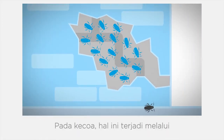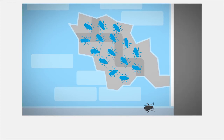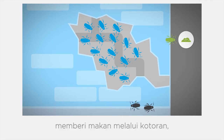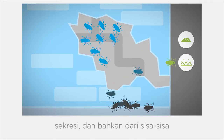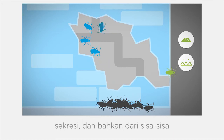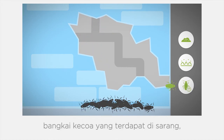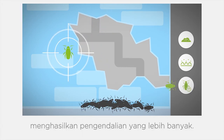With cockroaches, this occurs through the live cockroaches feeding off the feces, secretions, and even the remains of the dead cockroaches in the harbourage, leading to additional control.